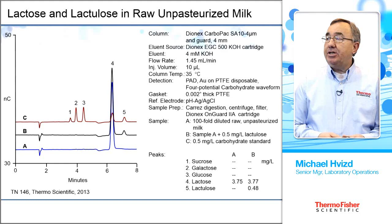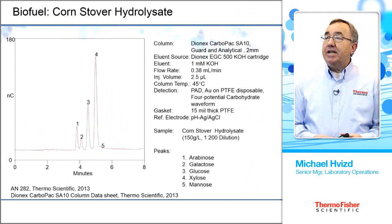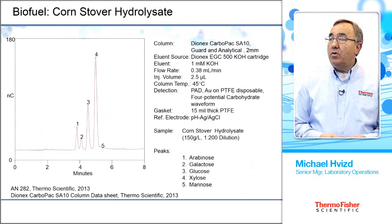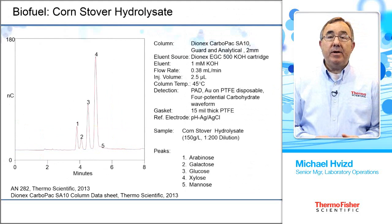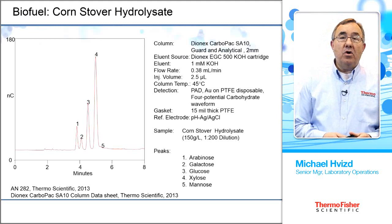An example of a biofuel application: here we're doing corn stover hydrolysate. In this application, we want to make the detector less sensitive, so we use a 15 mil thick gasket, where typically we only use a 1 mil gasket. This thicker gasket slows the linear velocity through the cell, making the detector less sensitive. Because there's an awful lot of sugar here, we don't want to make a very large dilution — we can do a small dilution and inject the sample as is, and that 15 mil gasket allows us to do that.